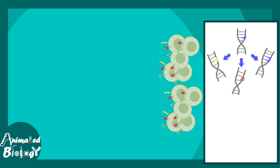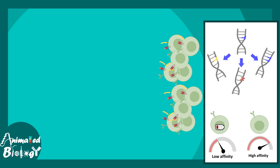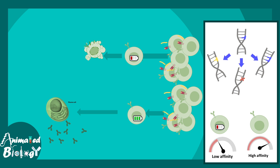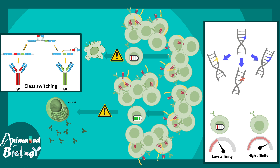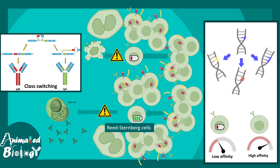Once a T cell activates a B cell, the activated B cell re-enters the cell cycle and proliferates rapidly. During this time, a somatic hypermutation event occurs. Some B cells develop low affinity receptors and eventually undergo apoptosis, while those with high affinity receptors form plasma cells. In Hodgkin's lymphoma, both the maturation process and the apoptosis process go wrong. What we end up with is a large number of activated B cells that rapidly proliferate, are not dying, and are not becoming plasma cells — they are non-functional and eventually form the giant Reed-Steinberg cells.